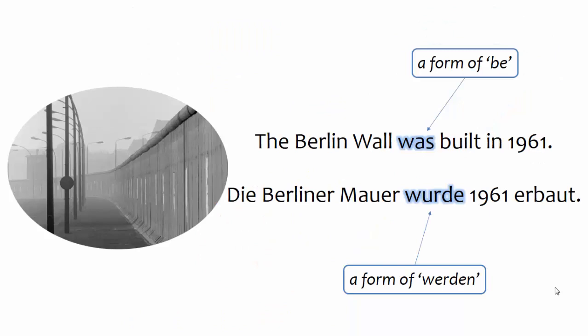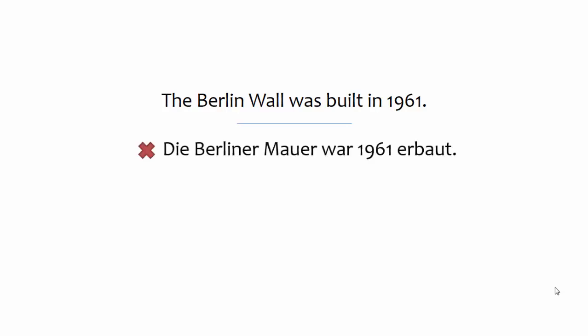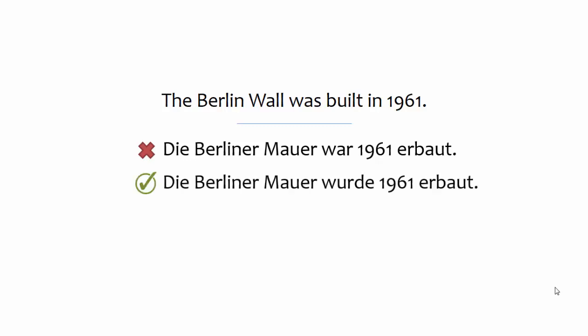Note the difference between passive in English and German. English uses the helping verb to be, while German uses the helping verb werden. Keep that difference in mind, and try to avoid the common mistake of using war, ist, or other forms of sein when forming the passive. Native speakers of English often make this mistake because they incorrectly assume that German passive is formed just like English passive. Correct formation of the passive in German requires the helping verb werden.